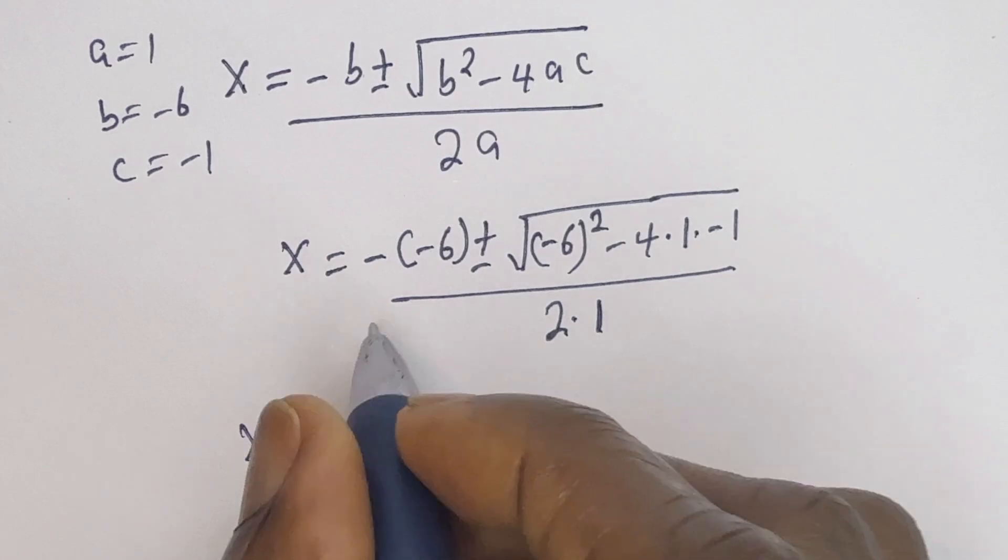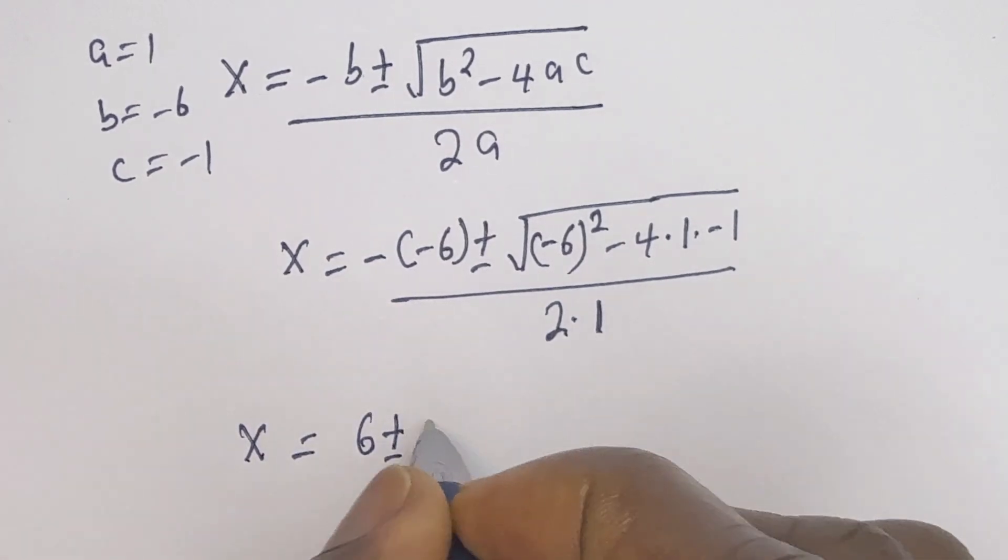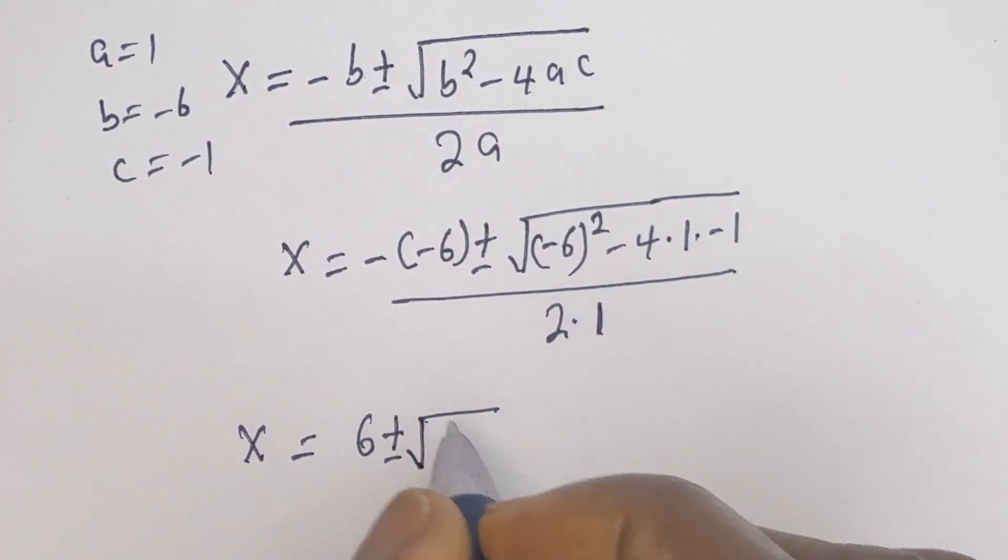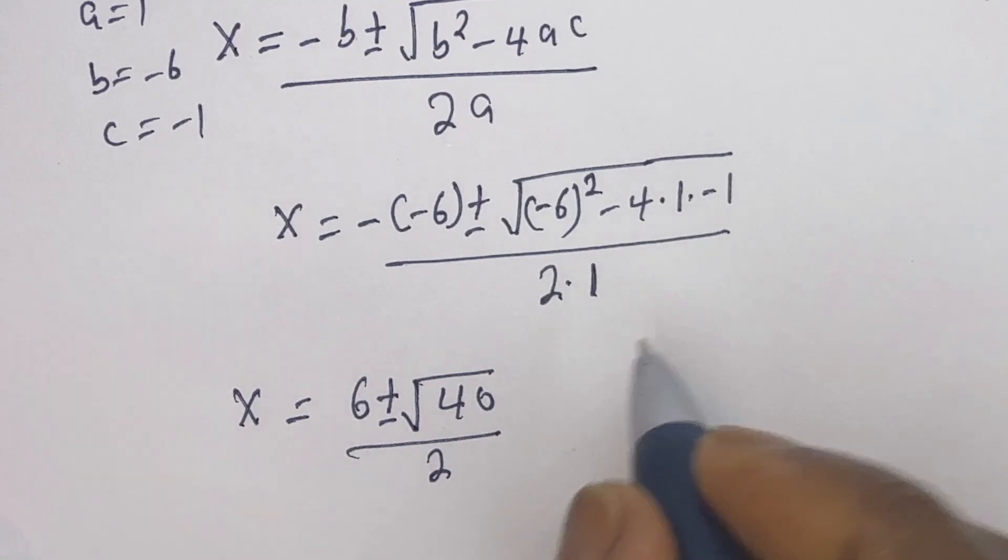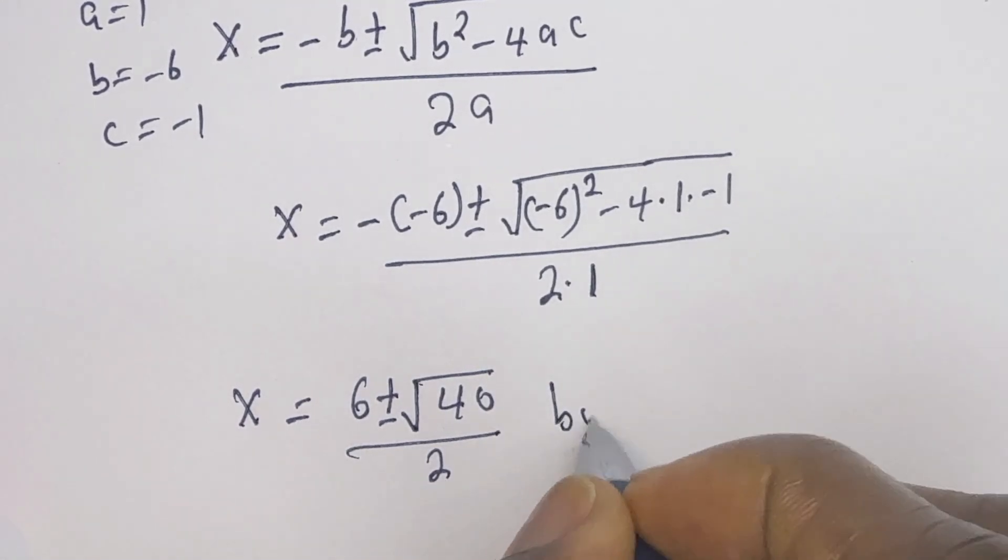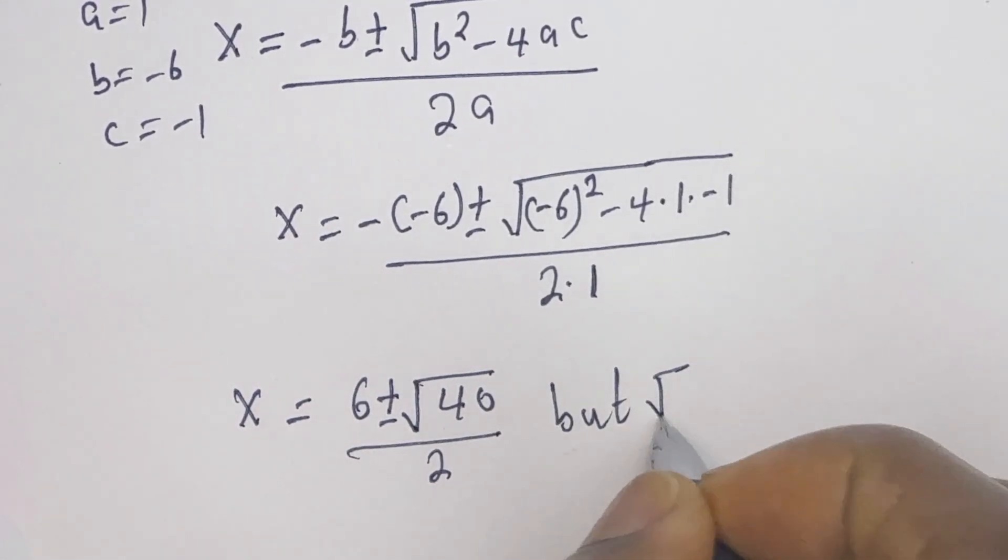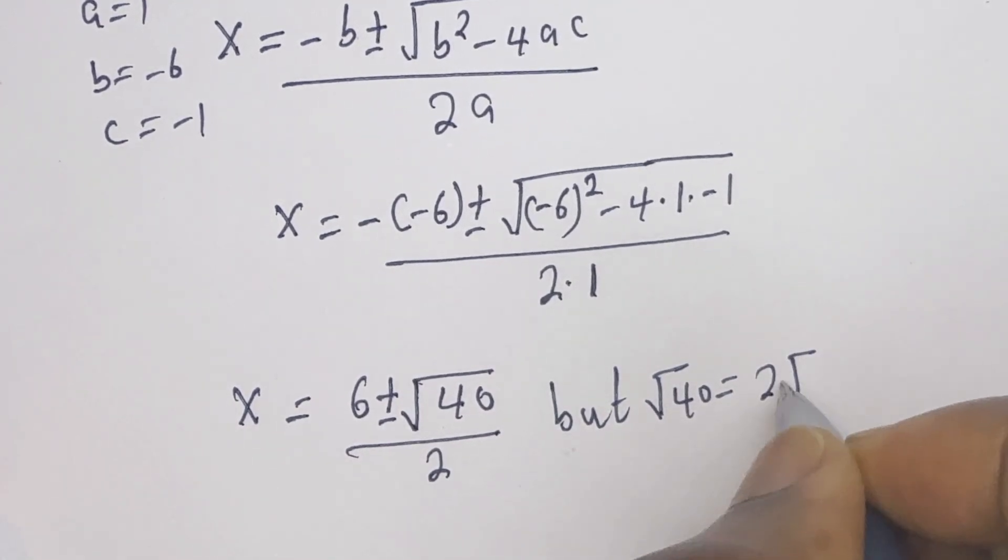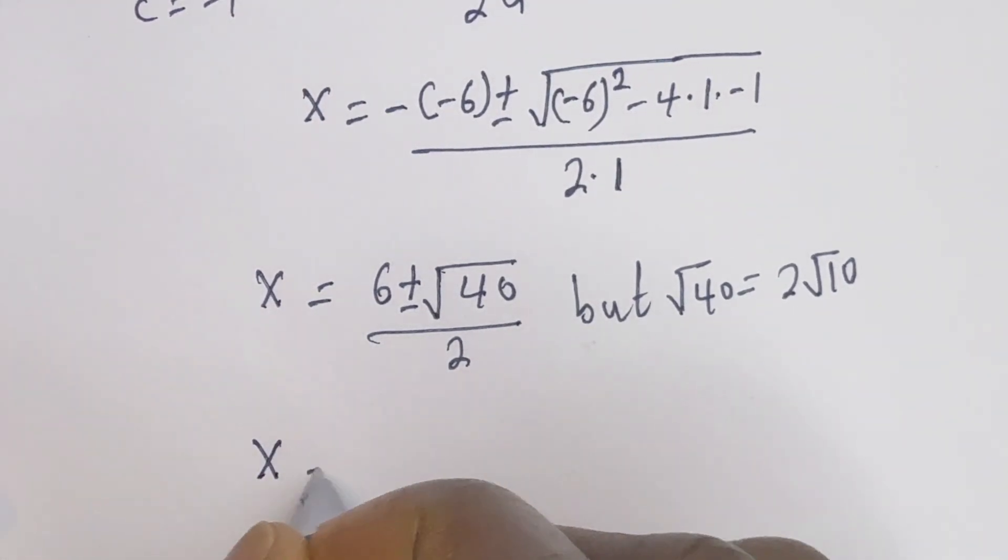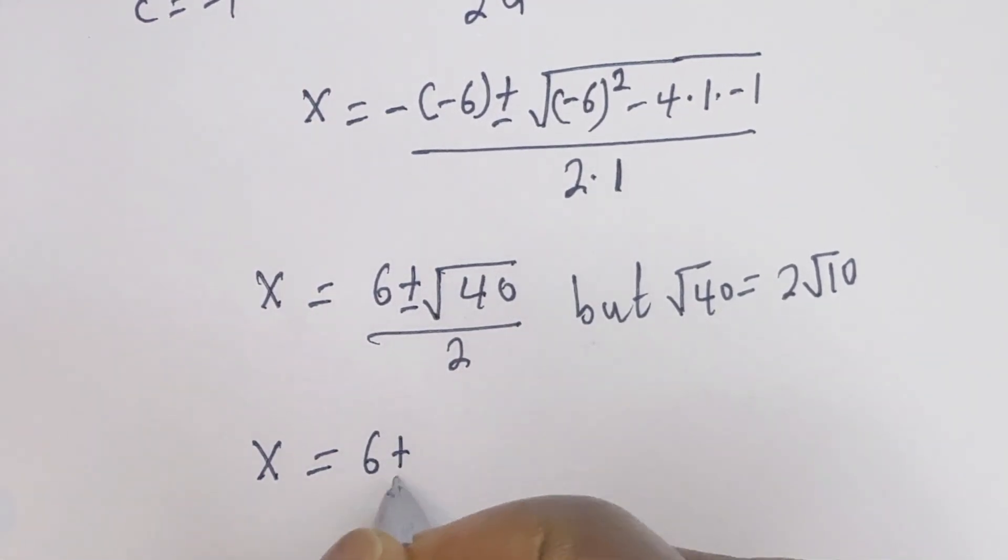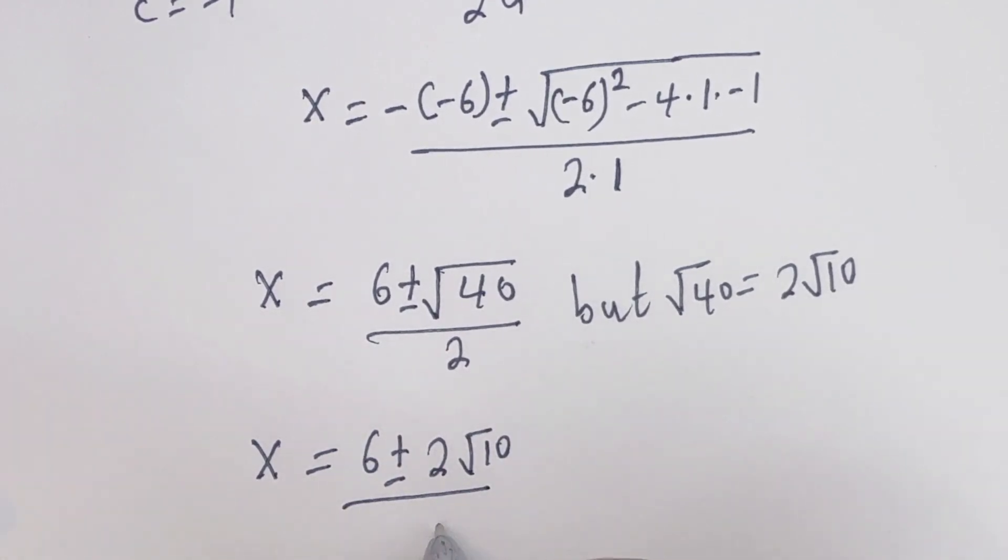So x is equal to 6 plus or minus square root of 40 divided by 2. But square root of 40 is equal to 2 root 10. Then x is equal to 6 plus or minus square root of 10 divided by 2.